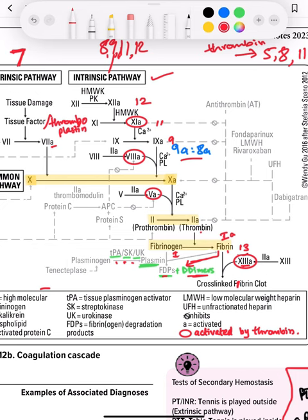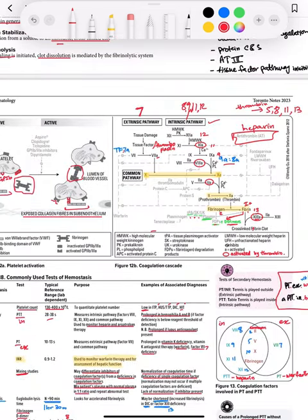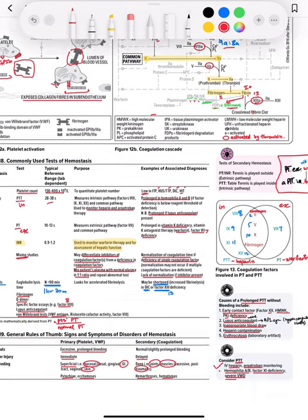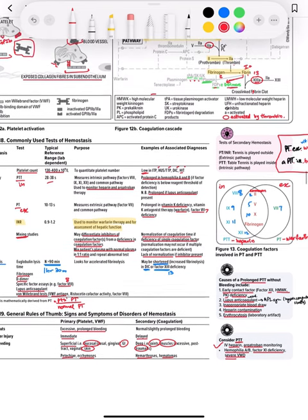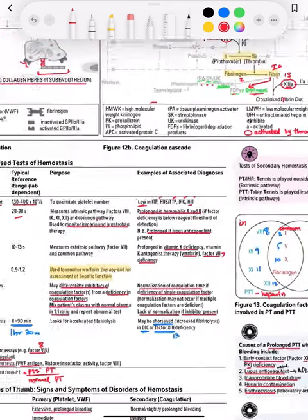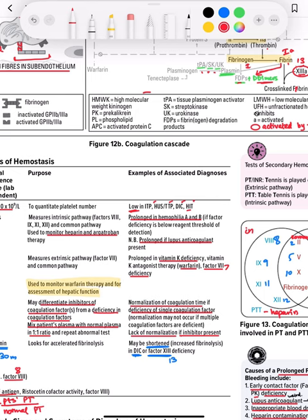If a person is having heparin therapy, we measure PTT as it involves the intrinsic pathway. PTT is prolonged in hemophilia A and B if there's factor deficiency, and also prolonged if there's lupus anticoagulant present. In antiphospholipid syndrome, there's lupus anticoagulant present, but antiphospholipid syndrome is a hypercoagulable state. PTT is prolonged because of the antibodies present in APLA — that's where the name lupus anticoagulant comes from.